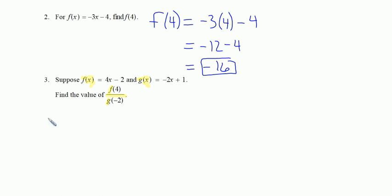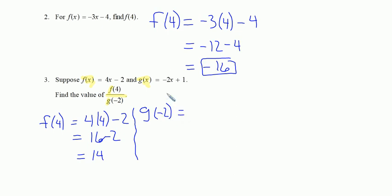Let's do a little preliminary work here first. Let's find out what f of four is for number three. So the f function says four times x, in this case x is four again, and then subtract two. Well, I have 16 minus two is 14. So f of four is 14. Now let's find g of negative two. So we'll go to the g function and put in a negative two. Negative two times negative two is positive four, plus one is five.